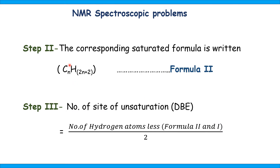In step 2, the corresponding saturated formula is written. The corresponding saturated formula has the general formula CₙH₂ₙ₊₂, and that saturated formula is considered as formula 2. In step 3, the number of sites of unsaturation is calculated. The number of sites of unsaturation equals the number of hydrogen atoms fewer in formula 1 compared to formula 2, divided by 2. That ratio gives the number of sites of unsaturation or double bond equivalent.